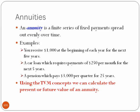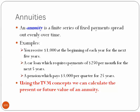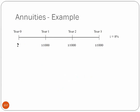Using the time value of money concepts, we can calculate the present or future value of an annuity. In this example, unlike our earlier ones where there was only one $1,000 payment, we have three $1,000 payments spread out evenly over these three years.